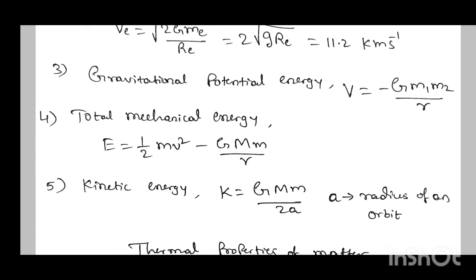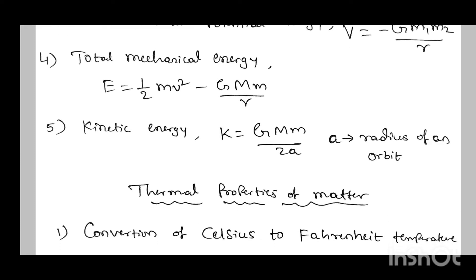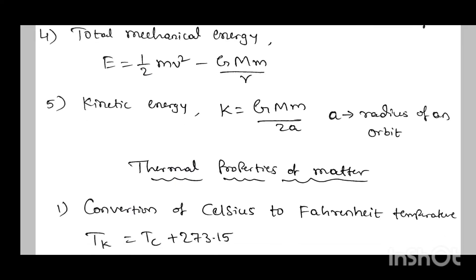Next, kinetic energy K equal to capital G times capital M times small m divided by 2a, where 2a is the radius of the orbit. These are the main formulas in the gravitation chapter.